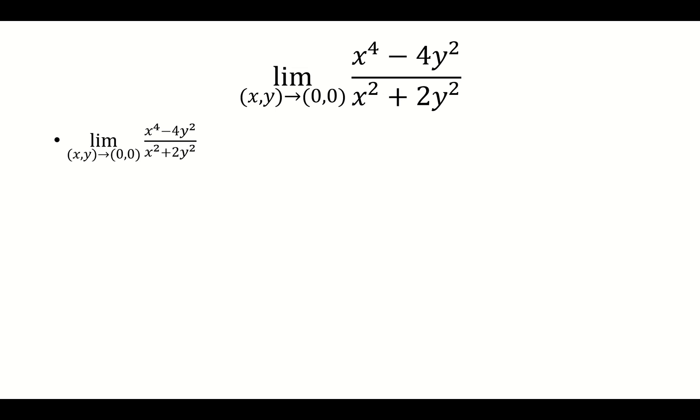So there's a good chance whenever you get 0 over 0, if you cannot simplify this into something simpler, in other words, eliminating the denominator, then it's a good chance that the limit won't exist. So we're assuming the limit won't exist, and so we're going to look at different paths.